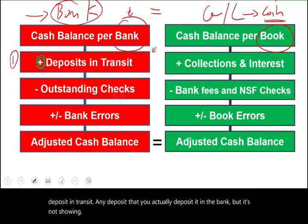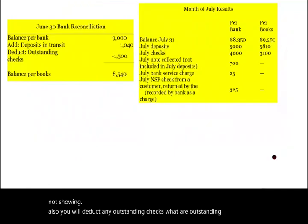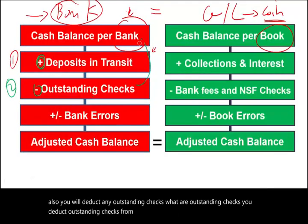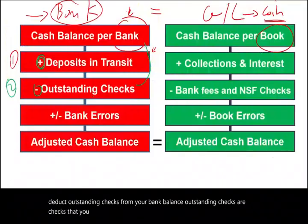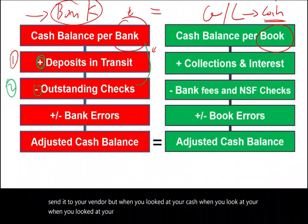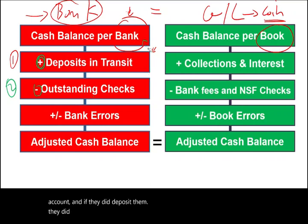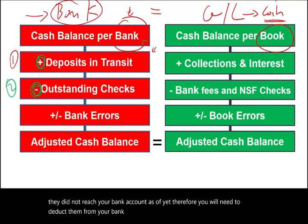Also, you will deduct any outstanding checks from your bank balance. Outstanding checks are checks that you wrote — you sent them to your suppliers, your vendors — but when you looked at your bank statement, those checks were not cleared. In other words, the supplier or vendor did not deposit them in their bank account, or if they did, they did not reach your bank account as of yet. Therefore, you will need to deduct them from your bank statement because the bank is not aware of it.